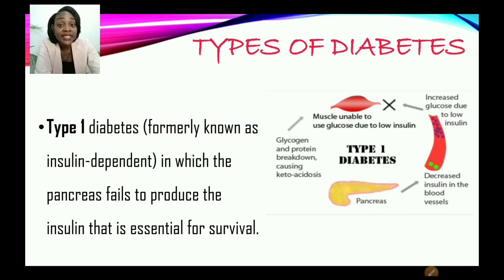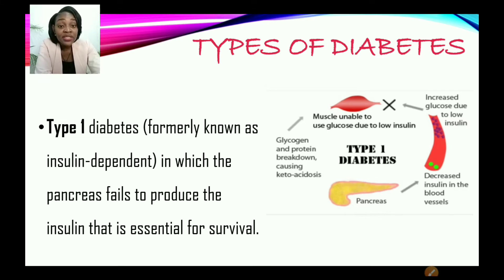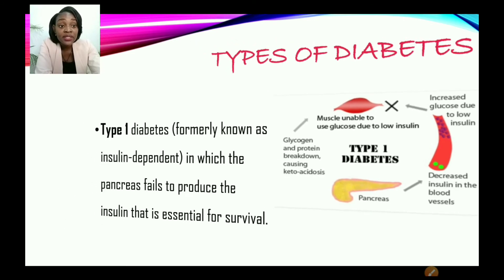Now, let us look in detail at type 1 diabetes. It is formally known as insulin dependent, where the pancreas fails to produce the insulin that is essential for survival. So in type 1, patients' pancreas does not produce any insulin and therefore they may have to take insulin injections or medications so that insulin is present in their body to help break down the sugar glucose.